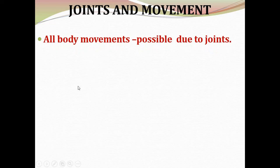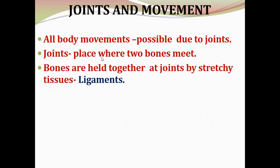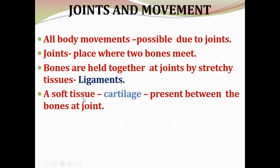Now let's see about joints and movement. All body movement is possible due to joints. A joint is a place where two bones meet. Bones are held together at joints by stretchy tissues called ligaments. A soft tissue called cartilage is present between the bones at a joint.